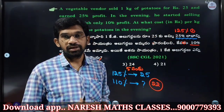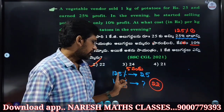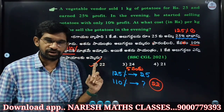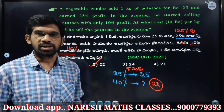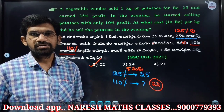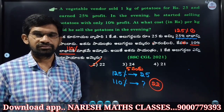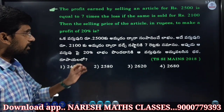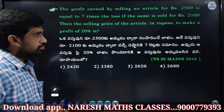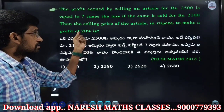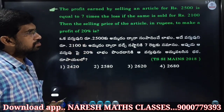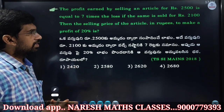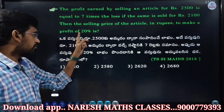They call it 25 percent. If the item is sold for 2,100 rupees at 90 percent, that is seven times the last value. If the item is sold for 2,100 rupees, find the selling price of the article to make a profit of 20 percent.